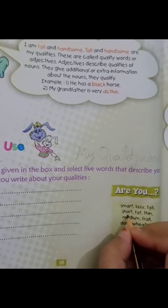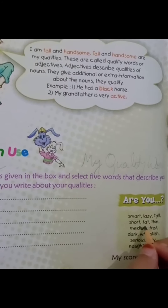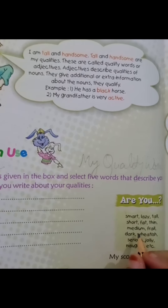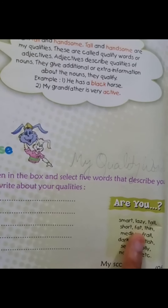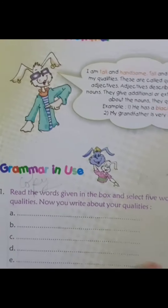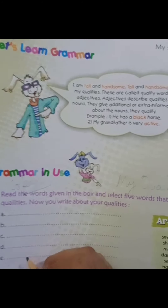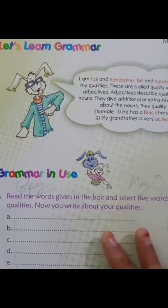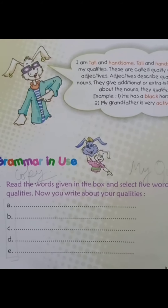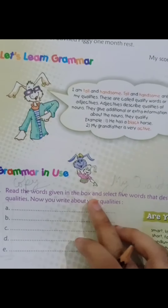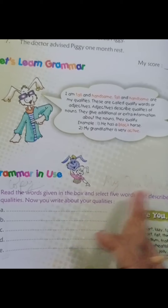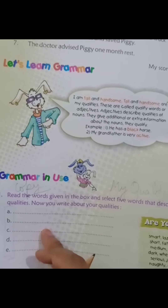You can write 'tall' or 'short,' 'fat' or 'thin,' or maybe 'medium.' You can also write 'dark complexion,' 'frail,' 'whitish,' 'serious,' 'jolly,' or 'naughty' — according to your nature. You can write any adjective words that describe your personality. You can choose more than five as well, according to your personality.